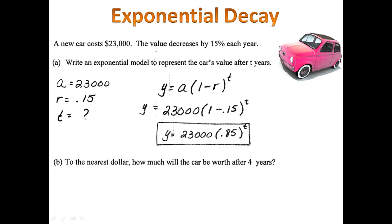In Part B, they want to know how much the car is worth after 4 years. In that case, we simply plug 4 in for t. Now we plug that into our calculator. We see that the car is worth about $12,006.